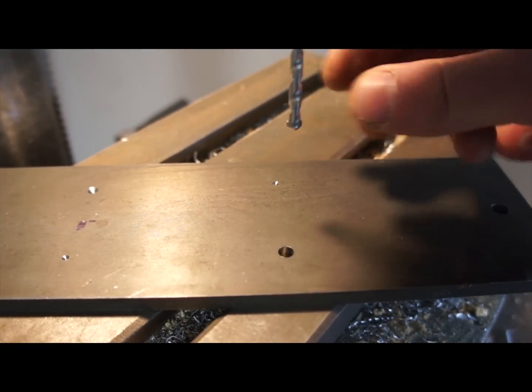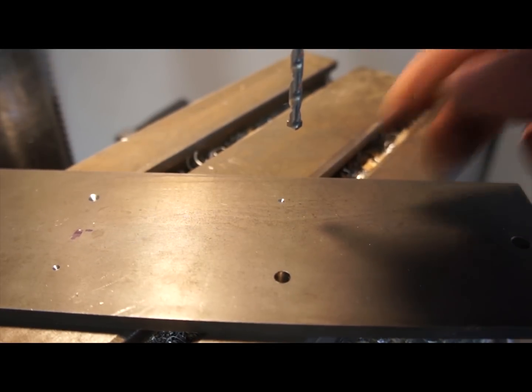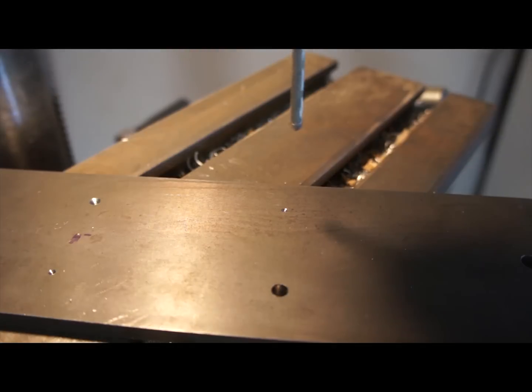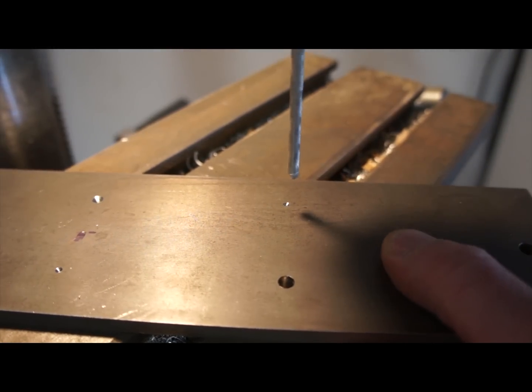I got to get a bigger one of these masonry bits—this one isn't going to be large enough. But at least I can take the bulk of the material out. I get about one hole and then I have to address the edges again because the metal is pretty aggressive on it.